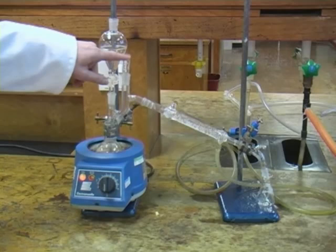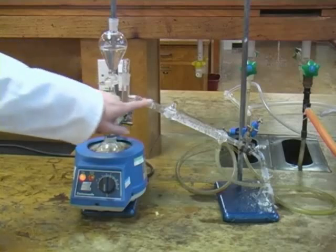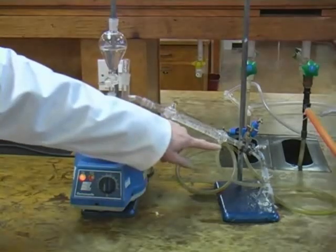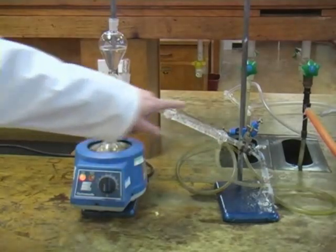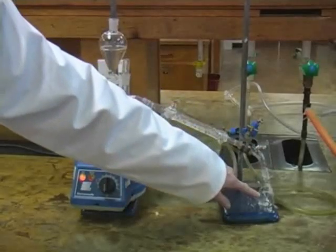In some cases a splash head may be connected at this point. Here we have a condenser with water running from bottom to top, and after the condenser we have a receiver running into a conical flask.